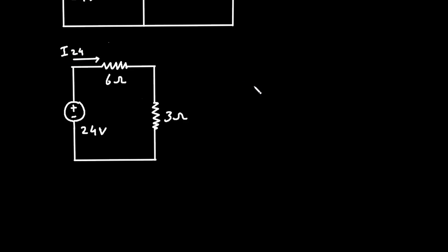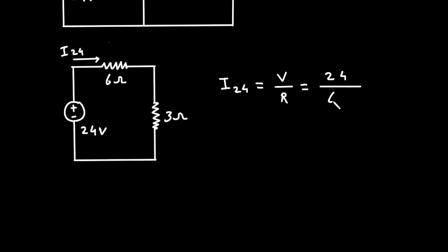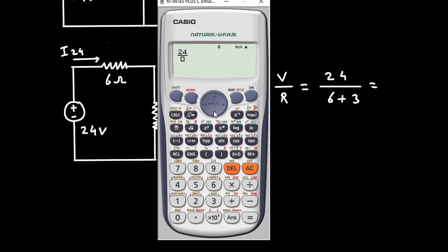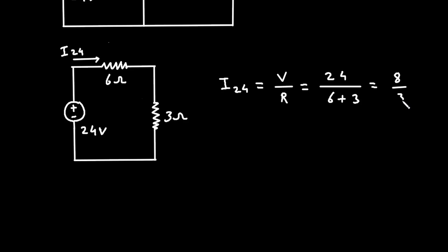Now we can easily find the value of I24. According to Ohm's law, I24 = V / R. Here the voltage is 24 and the resistance is 6 + 3. So I24 = 24 / (6 + 3) = 24 / 9 = 8/3 ampere. We are using this fraction to get the precise value.